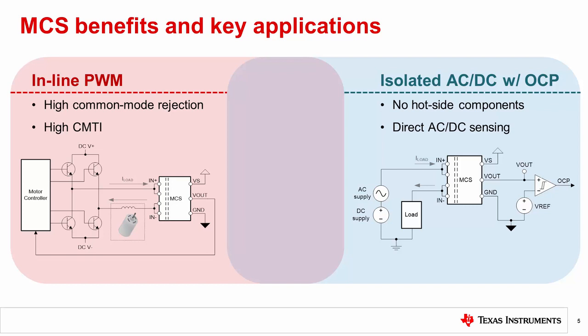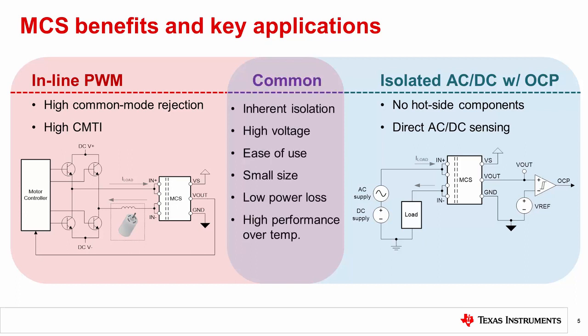Another application example, shown on the right, is isolated high voltage AC and DC power monitoring with overcurrent protection, OCP. Here, the fact that an MCS device does not need any hot side components and can sense the AC or DC signals directly is very appealing to system designers. Finally, many benefits of MCS devices are common to a wide variety of current sensing applications. These include their inherent isolation and handling of high voltages, ease of use, small solution size, low power loss due to the low impedance of the lead frame, and high performance over temperature.